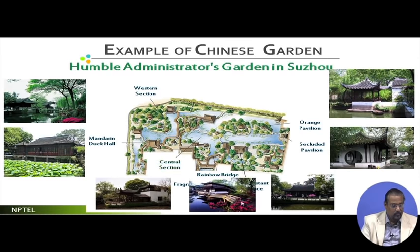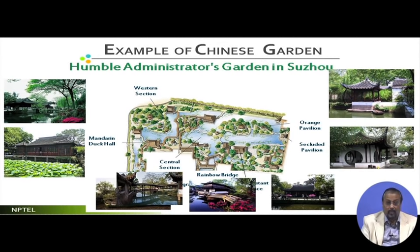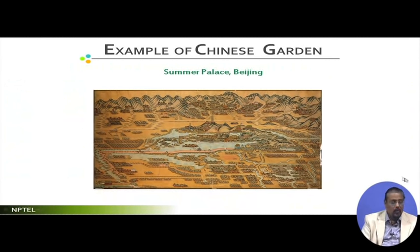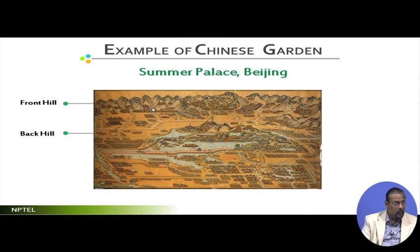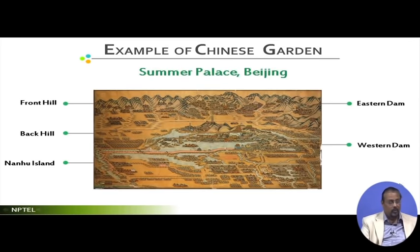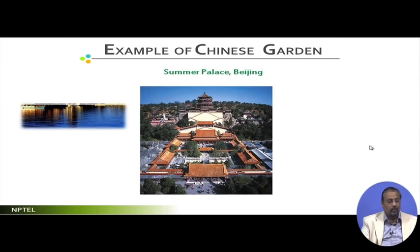There are isles, a rainbow bridge, and a central section making the entire area a good example of Chinese landscape. Looking at the map, there is no formality anywhere — everything is irregular, as if it was supposed to be naturally. Another example is the Summer Palace in Beijing, which has front hills, back hills, nano islands, an eastern dam, and a western dam. Looking at this picture, it is very much natural.